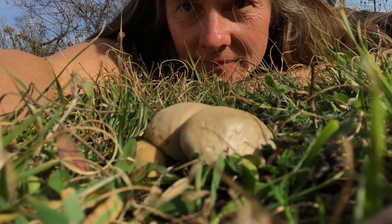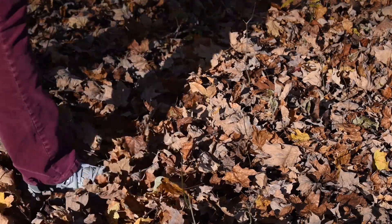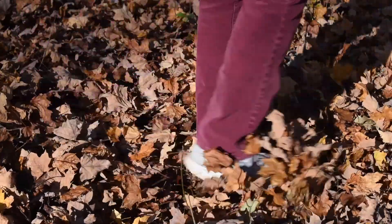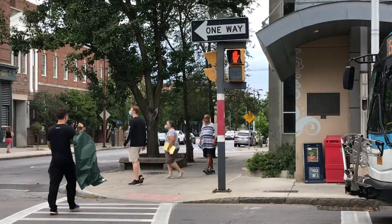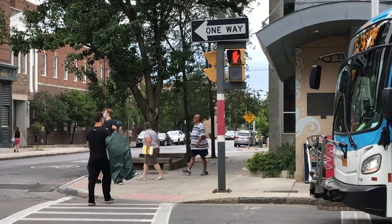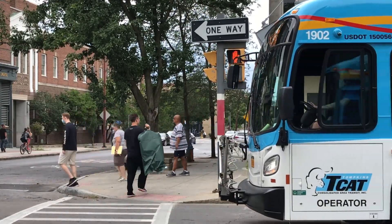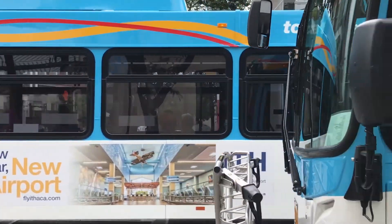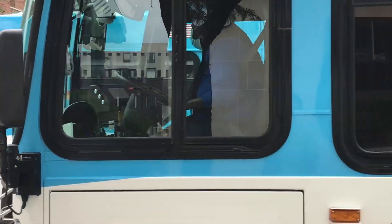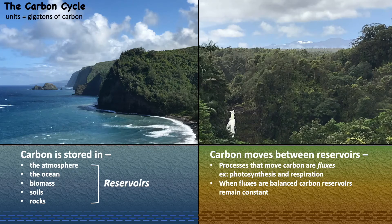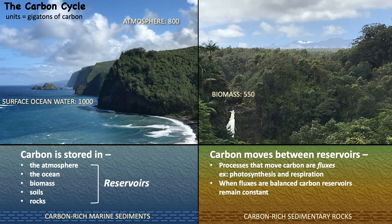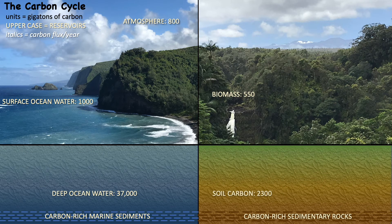Respiration is one of many processes that move carbon in the form of carbon dioxide from one place on Earth to another. We track the movement of carbon through the global carbon cycle. We usually think of the carbon cycle as a series of reservoirs, like the biosphere or the atmosphere, that are connected by processes that transfer carbon from one to the other.